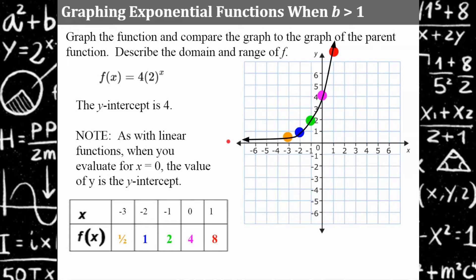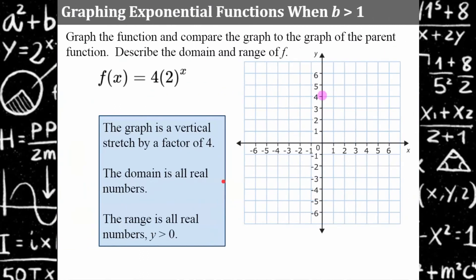Now draw the smooth curve — that's plenty of points, actually more than you probably need. You want to know how fast it's increasing and how slowly it's approaching the x-axis. Once you've got a few points on either side of your y-intercept, I only have one on the right because it's steeply rising over there. This is a vertical stretch by a factor of four.